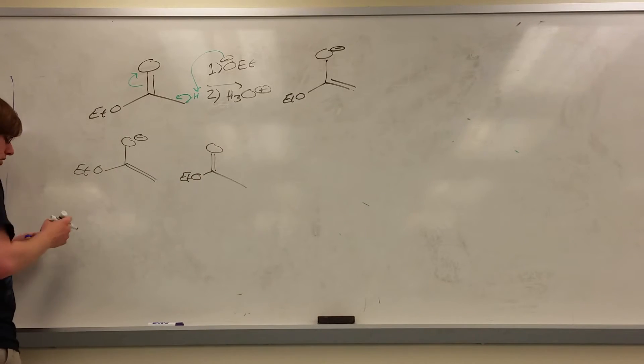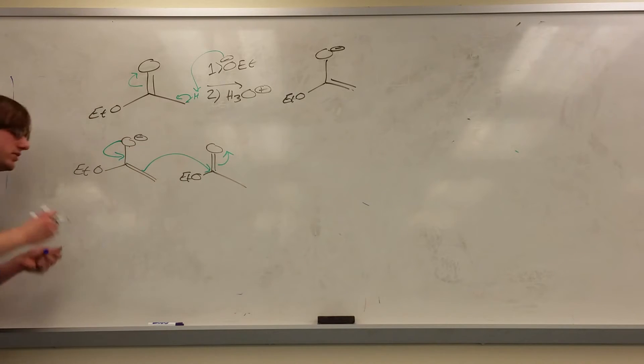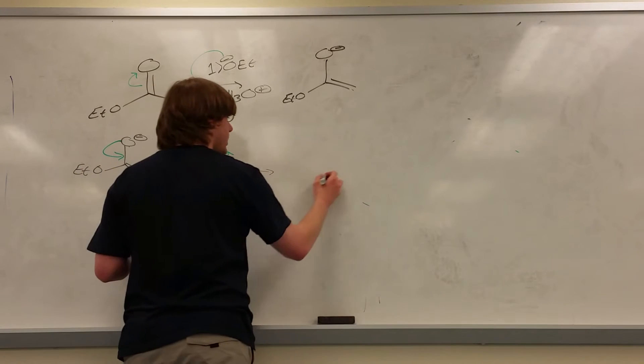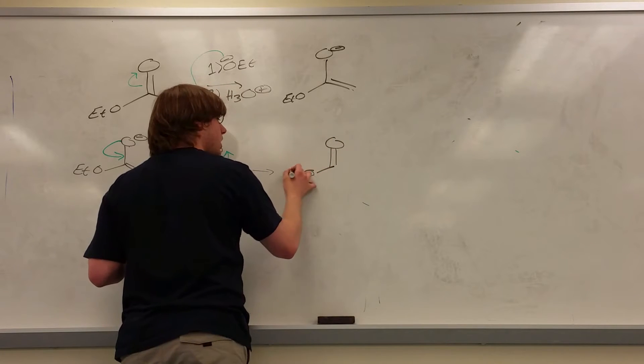So this enolate will swing down, and the double bond will attack the carbonyl of another one that isn't in its enolate form. And that would result in the double bond reforming on the first one.